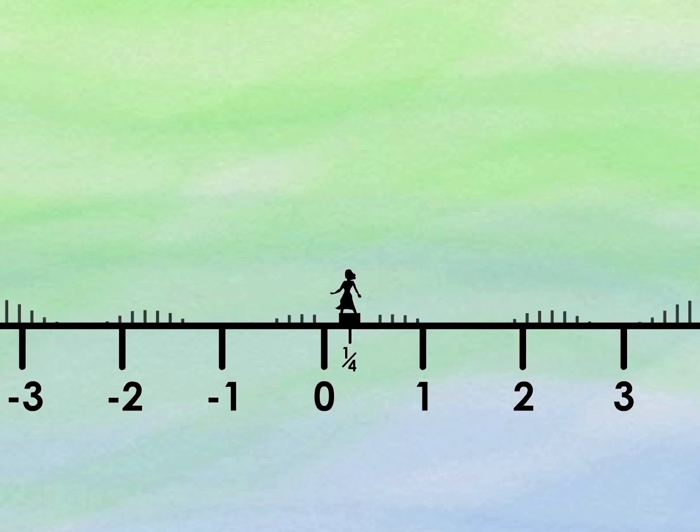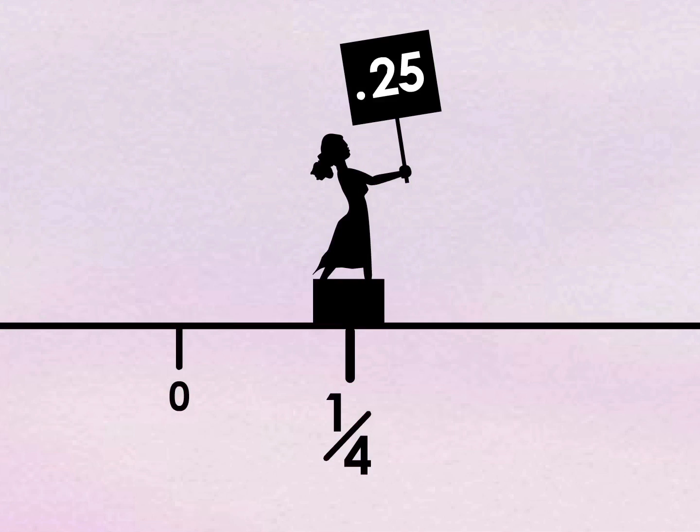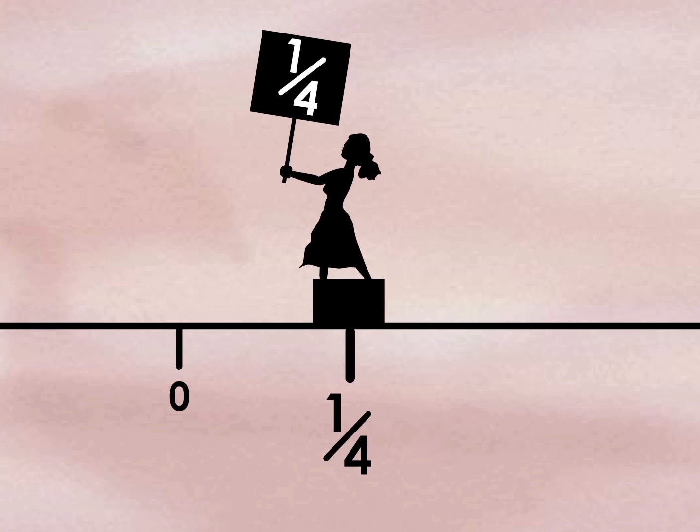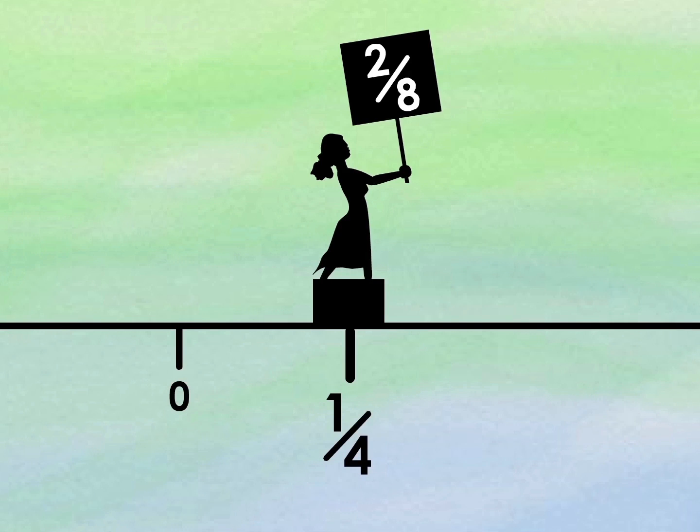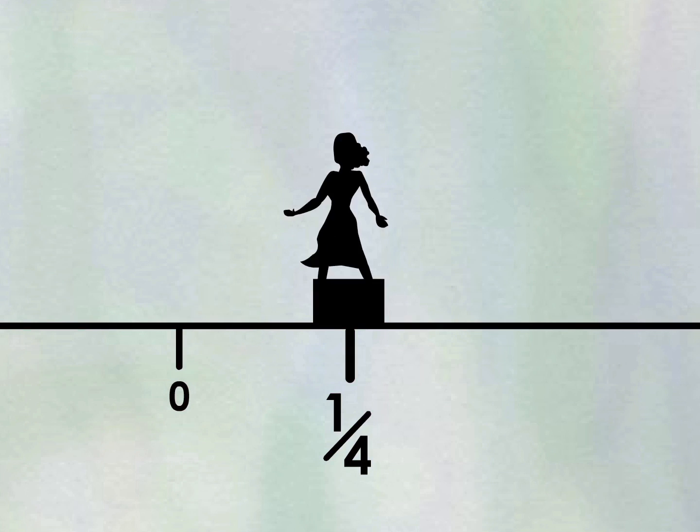We are not to be judged by our decimal points or the fact we have numerators and denominators. Whether you call me point two-five, one-fourth, two-eighths, even seven-twenty-eighths, I still have my place on the number line.